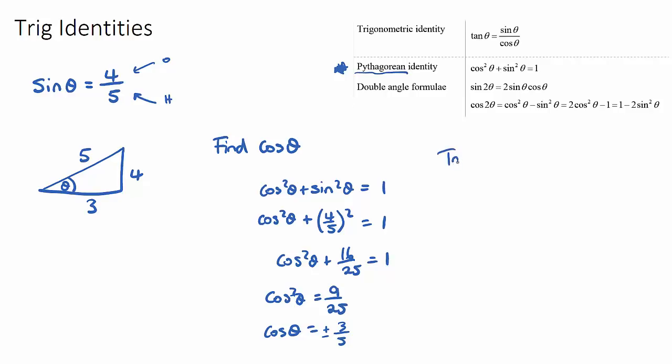Now, tan θ, let's have a look at our same example. And this one, it would be opposite over adjacent, which is 4/3. And the trig identity for tan θ is sin θ over cos θ.